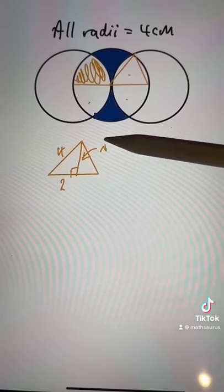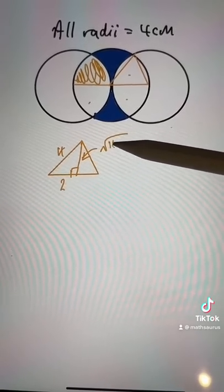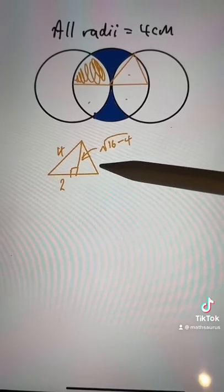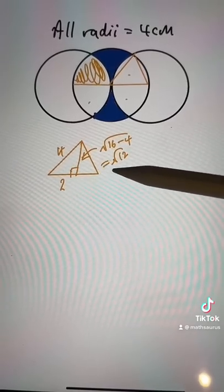And then the height here by Pythagoras would be the square root of 4 squared minus 2 squared, the square root of 16 minus 4. That's the square root of 12.